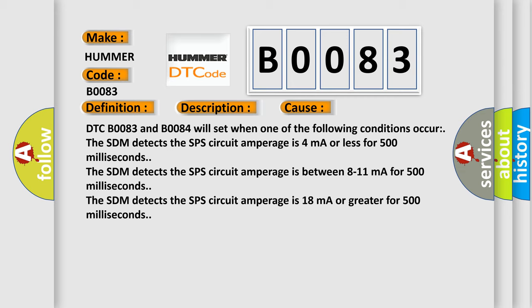DTC B0083 and B0084 will set when one of the following conditions occur. The SDM detects the SPS circuit amperage is 4 mA or less for 500 milliseconds. The SDM detects the SPS circuit amperage is between 8 to 11 mA for 500 milliseconds. The SDM detects the SPS circuit amperage is 18 mA or greater for 500 milliseconds.